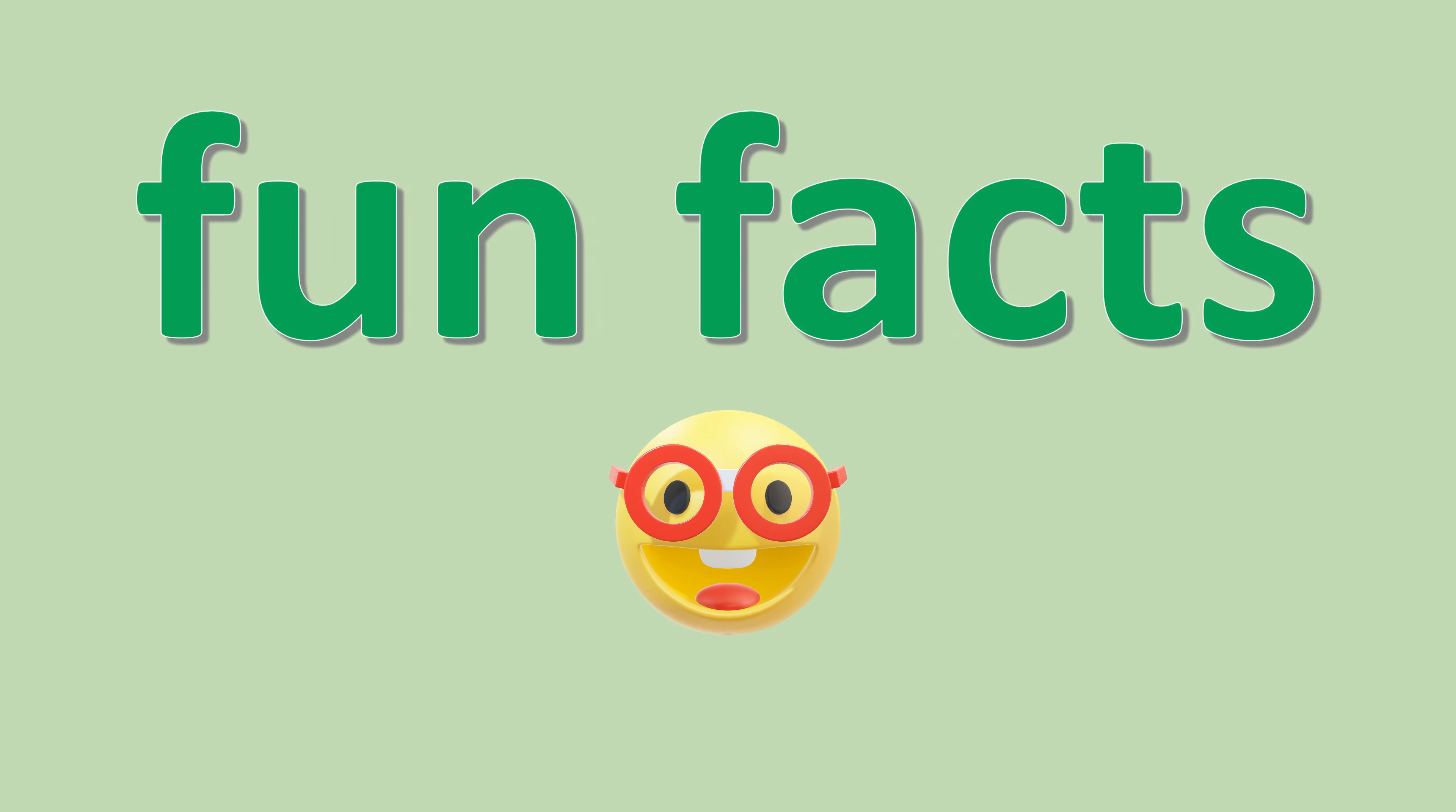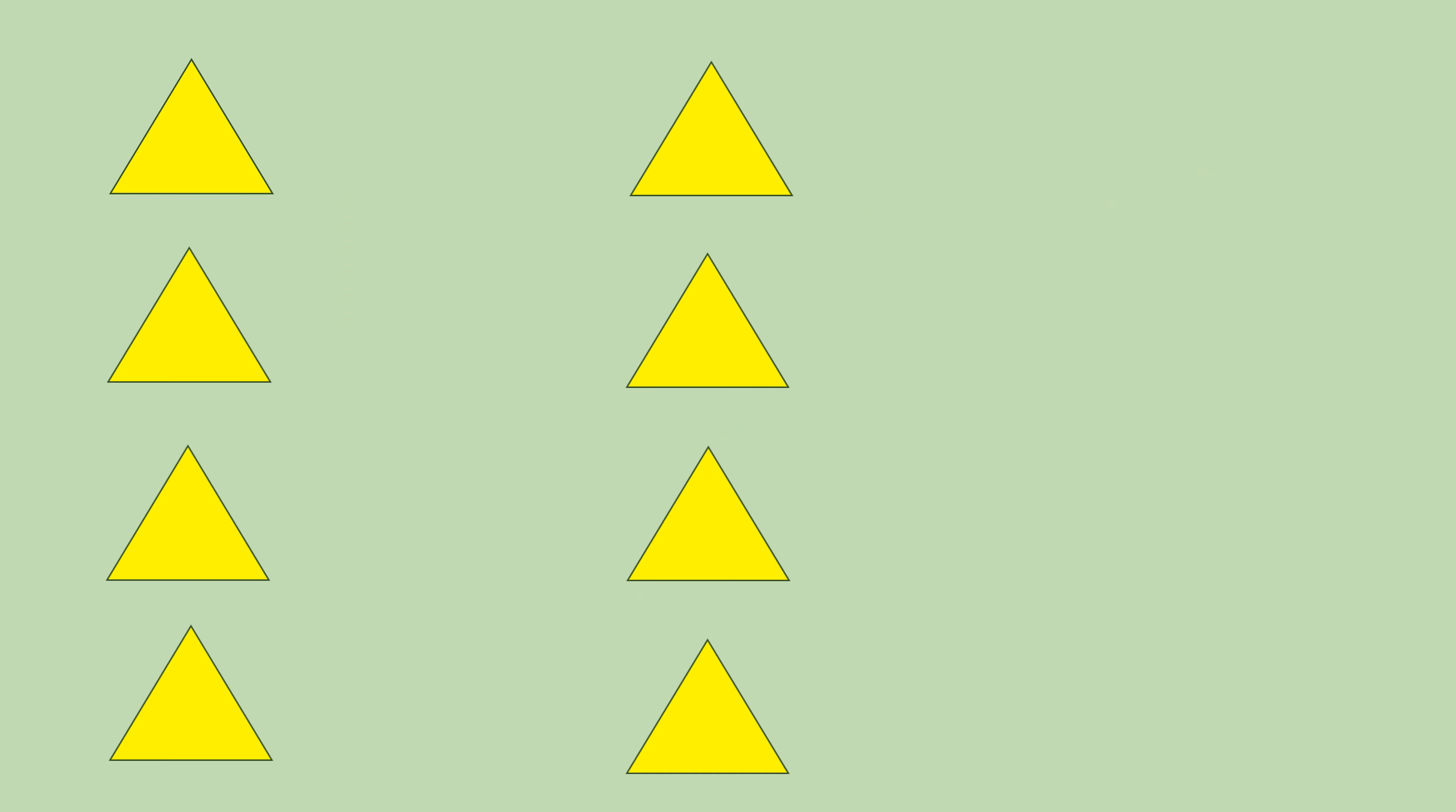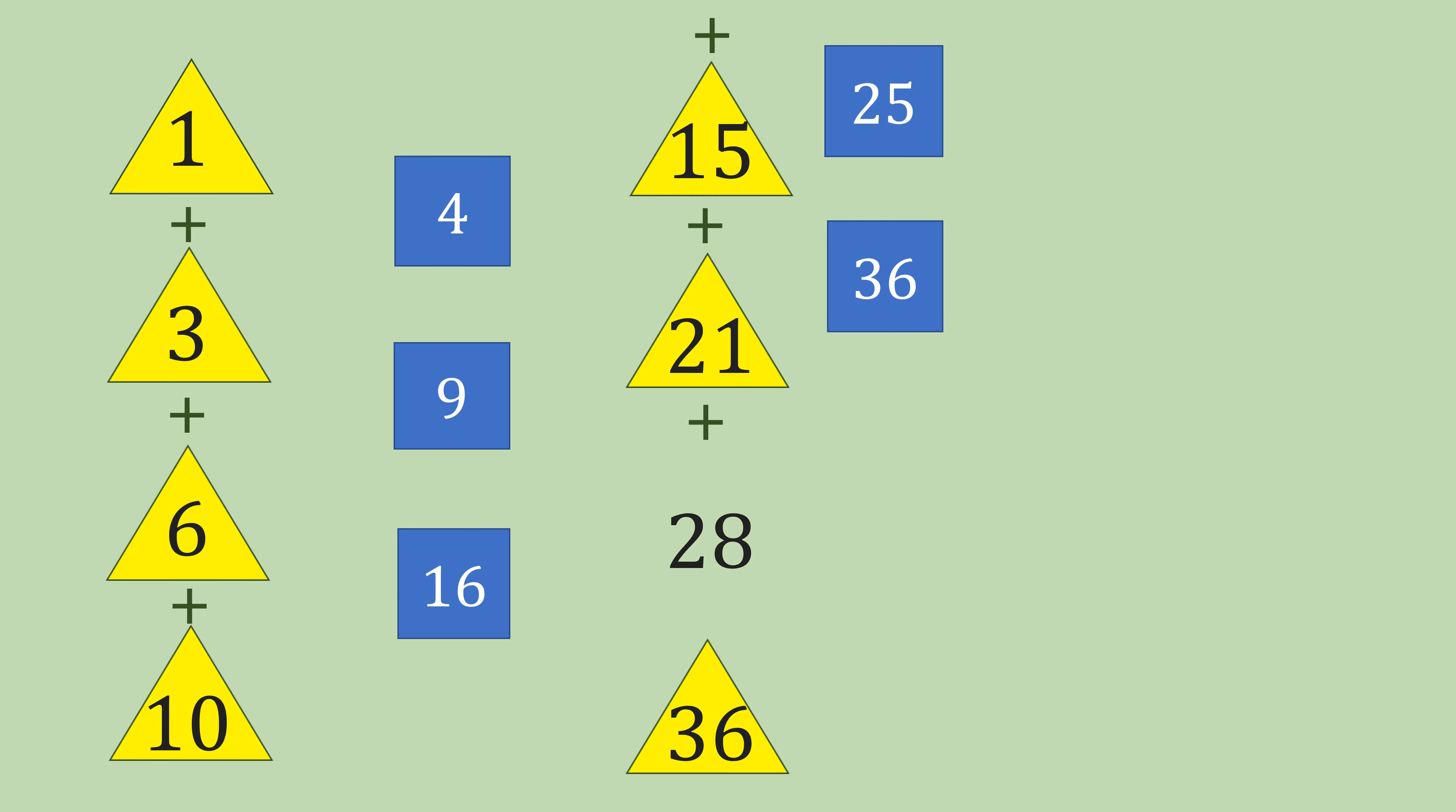Time for some fun facts. Looking at the first eight triangular numbers, if we added up the consecutive numbers, for example, one plus three, it makes four. And if we add three plus six, it gives us nine, six plus ten is 16, and 10 plus 15 is 25. Can you see the pattern? Two consecutive triangular numbers make square numbers.